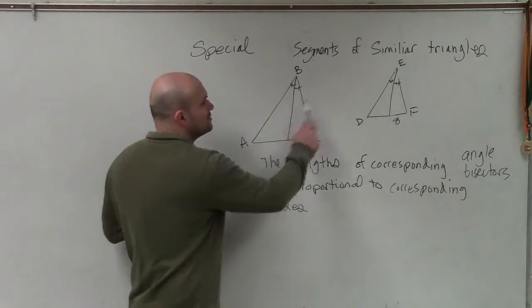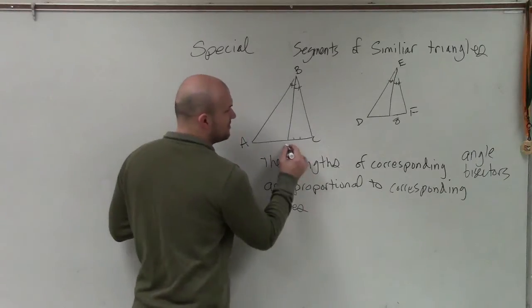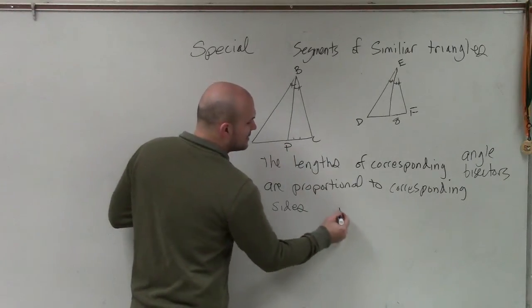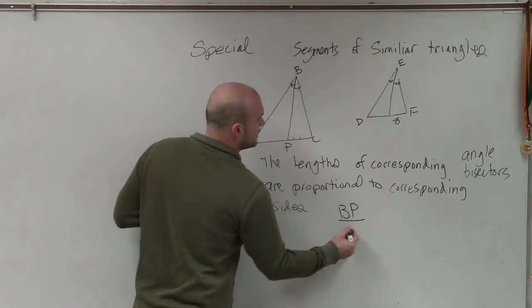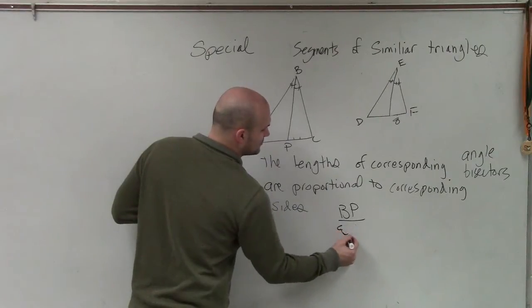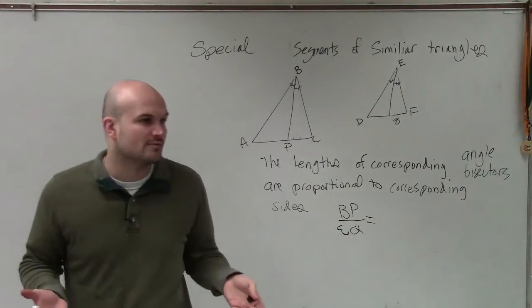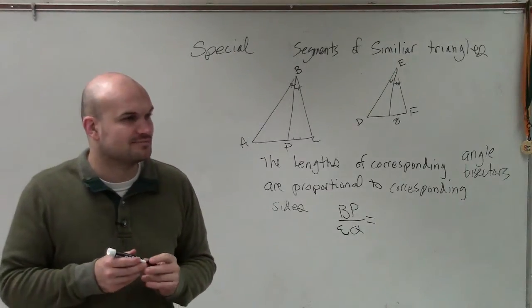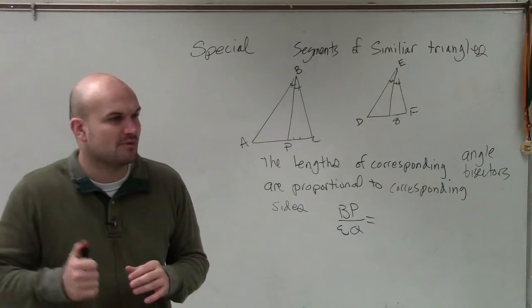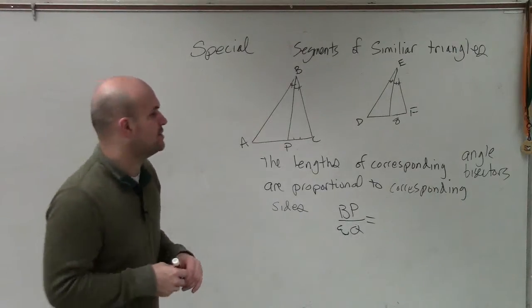Meaning that these two lengths, which I can now write, let's write that as P. Now I can write BP over P is to EQ, which is equal to, give me a side, Jordan. What are two sides of those triangles? What are two corresponding sides that we can write as a proportion or as a ratio?